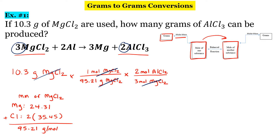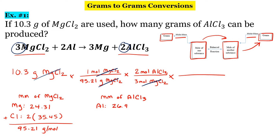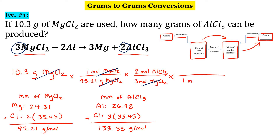Our final step is to go from moles to grams, and we're going to use the molar mass to make this final jump. So we need the molar mass of aluminum chloride, AlCl₃. Aluminum is 26.98, and then we have three chlorines at 35.45 each. When we add that all up, I get 133.33 grams per mole. So for every one mole of aluminum chloride, we have 133.33 grams of aluminum chloride.